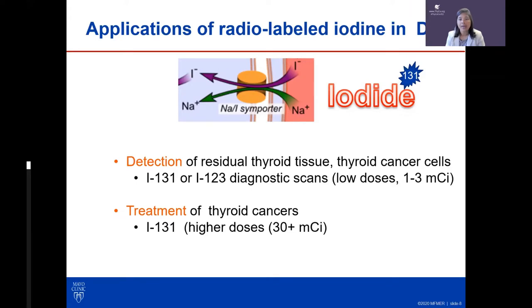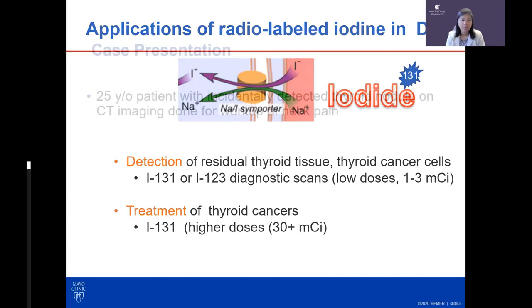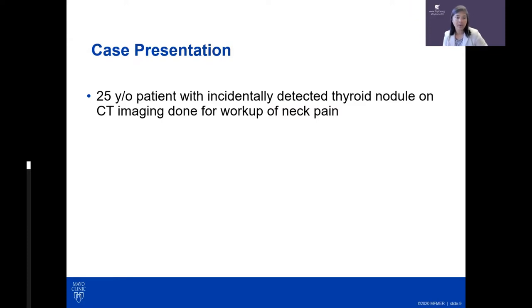Our applications for radioactive iodine in differentiated thyroid cancer include detection and treatment. Using low doses of I-131 — 1 to 3 millicuries — we can perform whole body scans to find where cancer is located. At higher doses, say over 30 millicuries, we can treat advanced thyroid cancers. Case presentations help illustrate how we think about iodine in the clinic.